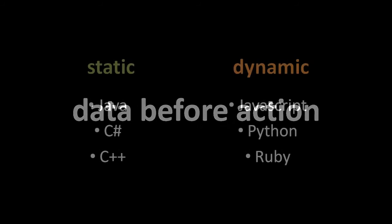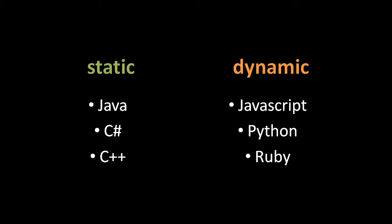Many popular programming languages today are considered object-oriented languages because they include features which assist or even encourage the programmer to program in an object-oriented style. Take, for example, these six popular current languages — three of which are statically typed: Java, C Sharp, and C++ — and three of which are dynamically typed: JavaScript, Python, and Ruby.